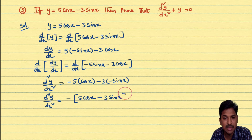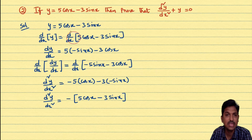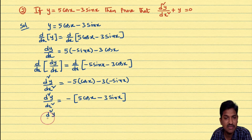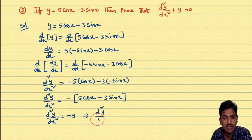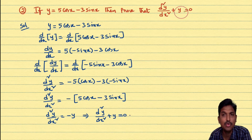Taking -1 common: d²y/dx² = -(5cos x - 3sin x). But 5cos x - 3sin x is y. So d²y/dx² = -y. Moving -y to the left: d²y/dx² + y = 0. Hence proved.